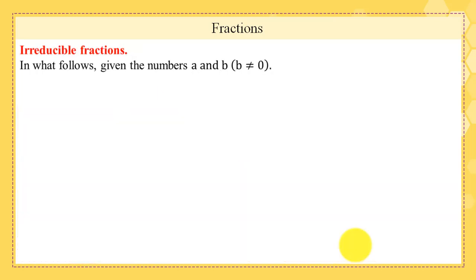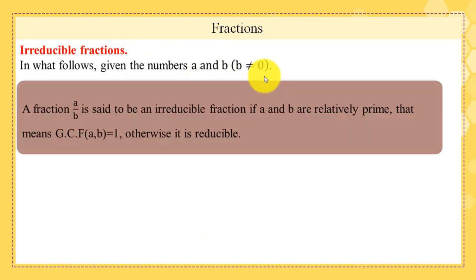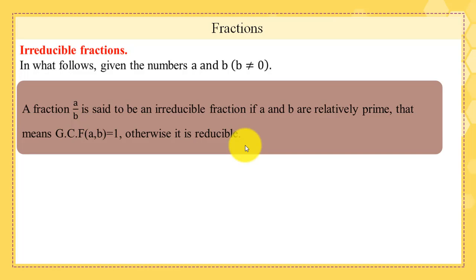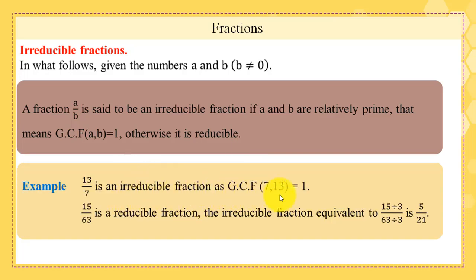Now, what is an irreducible fraction? Given numbers a and b where b ≠ 0, a fraction a/b is said to be irreducible if a and b are relatively prime, meaning the GCF(a, b) = 1; otherwise it is reducible. Example: 13/7 is irreducible since GCF(7, 13) = 1. While 15/63 is reducible since 15 and 63 are both divisible by 3, so the irreducible form is (15÷3)/(63÷3) = 5/21.